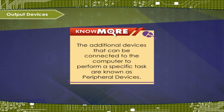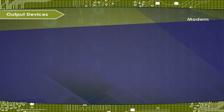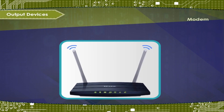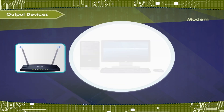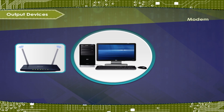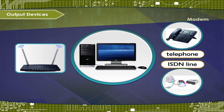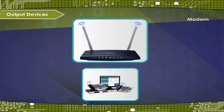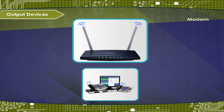The additional devices that can be connected to the computer to perform a specific task are known as peripheral devices. Modem stands for modulator and demodulator. It is an electronic device that allows a computer to exchange information over telephone or ISDN lines. The word modem is derived from a combination of the words modulate — to change a digital signal into an analog signal — and demodulate — to convert an analog signal into a digital signal at the receiving computer.